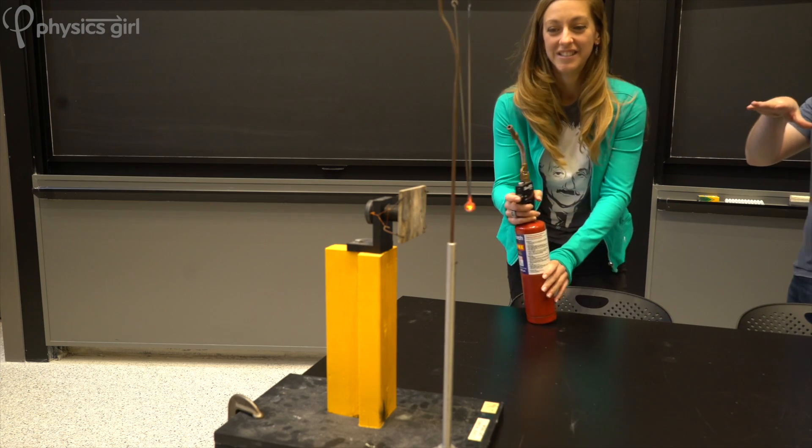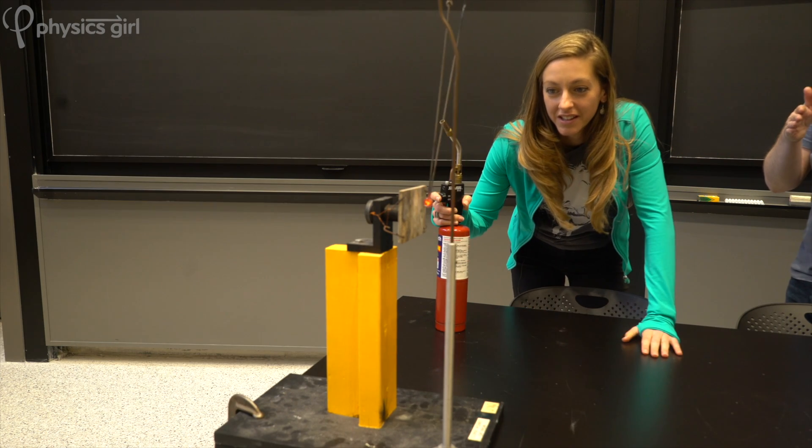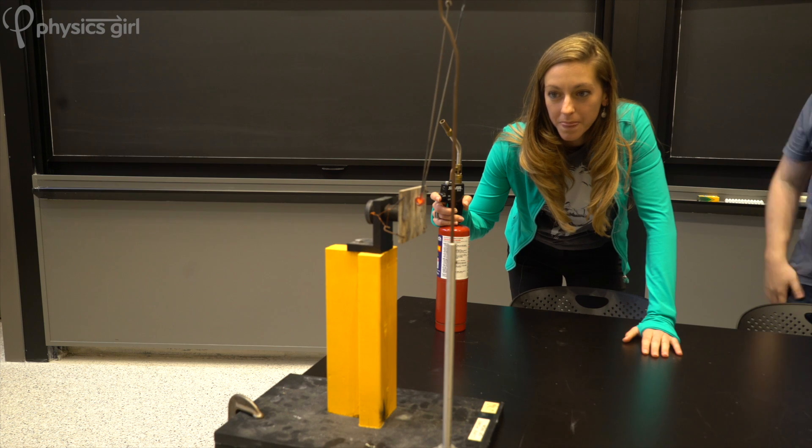This is just like how it's impossible to get a bunch of preschoolers to line up if they have a ton of energy. But if you freeze them, I mean, metaphorically, if you let the iron cool back down, it will actually be redrawn to the magnet.